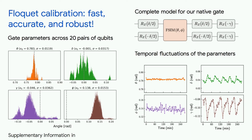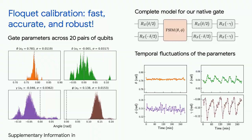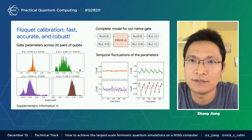Without this calibration, these error mitigation tricks will not take you very far. So we invented a new calibration technique that we call Floquet calibration. It works by measuring the Floquet quasi-energy instead of the expectation value of your quantum states. So the advantage is that this calibration is very fast, accurate, and robust.